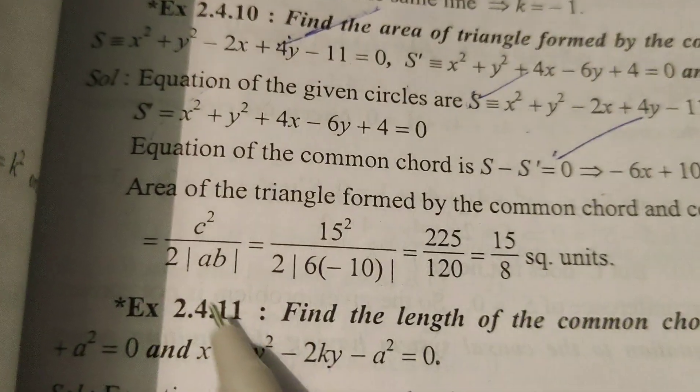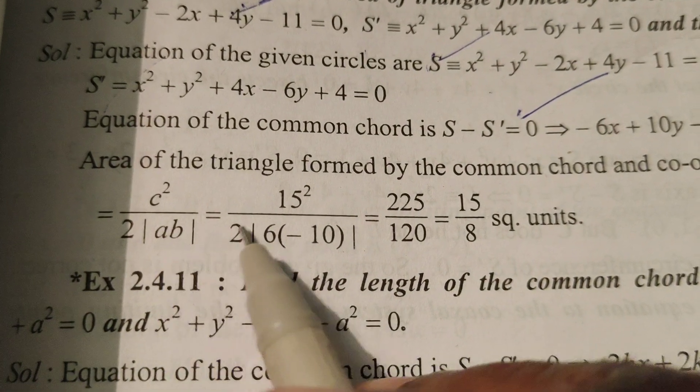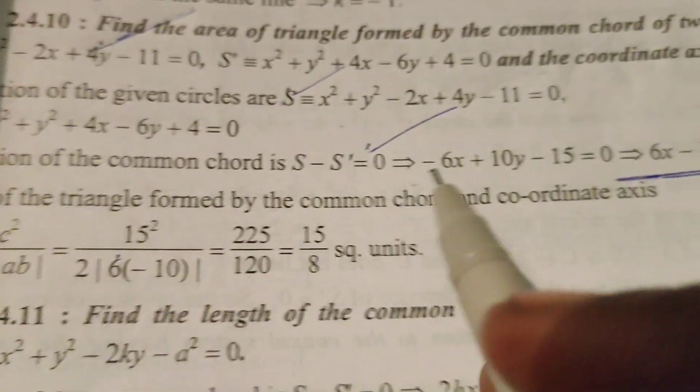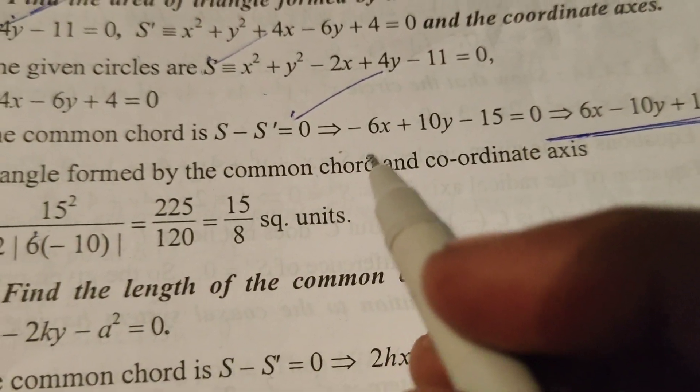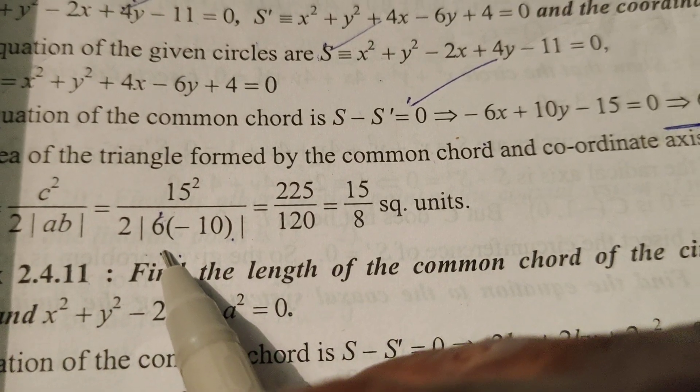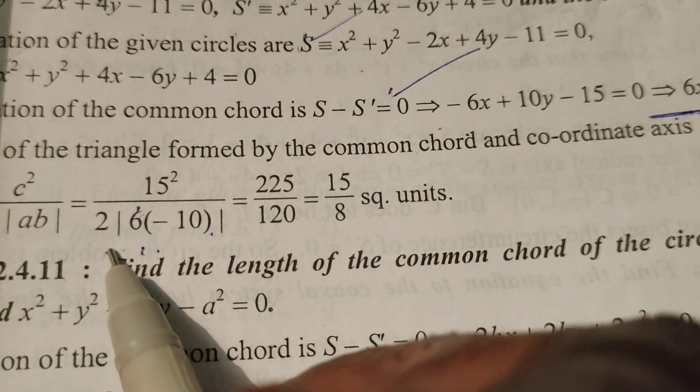So minus 15. Here minus 15 whole square means plus 15 square by 2 into modulus of AB. Minus 6 into 10, that is 10, 6 times 10 is 60, times 2 is 120.